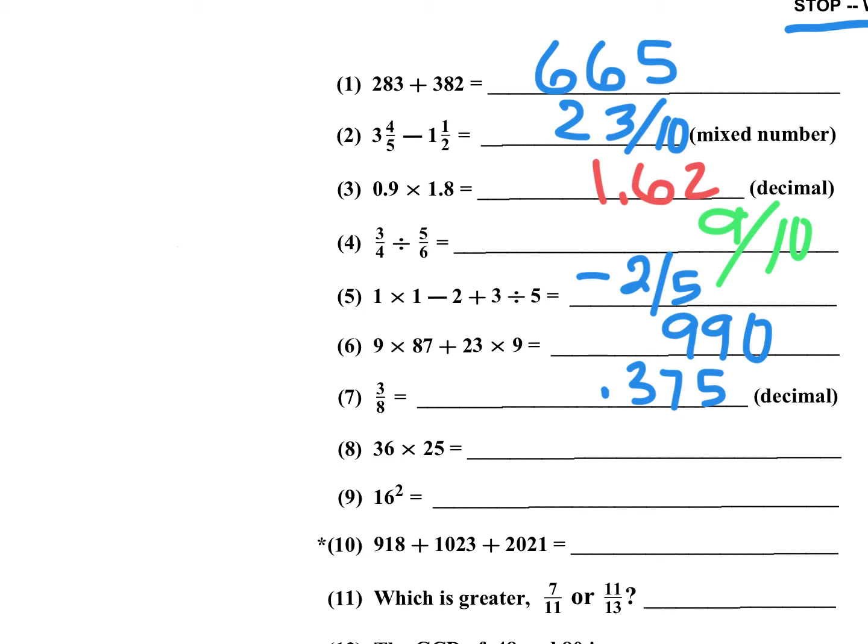Number 8 is 36 times 25. Just think of 25 as being 1 fourth of 100. So 1 fourth of 36 is 9. 9 times 100 is 900. When you see 25, 25 is 100 over 4. And so what I'm doing is I'm doing 4 into 36. That goes 9 times. 9 times 100 is 900. This is number sense. If you like number sense, hit the like button.